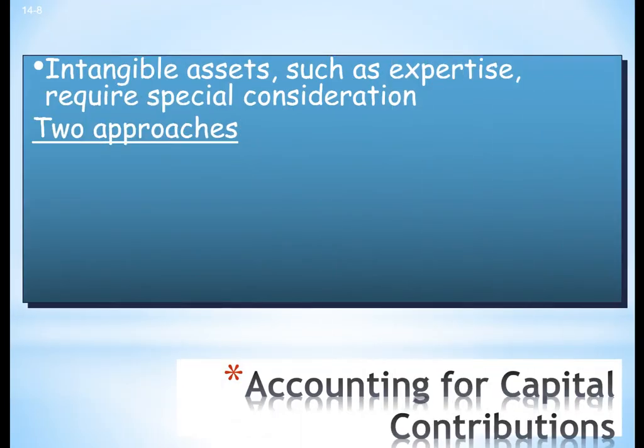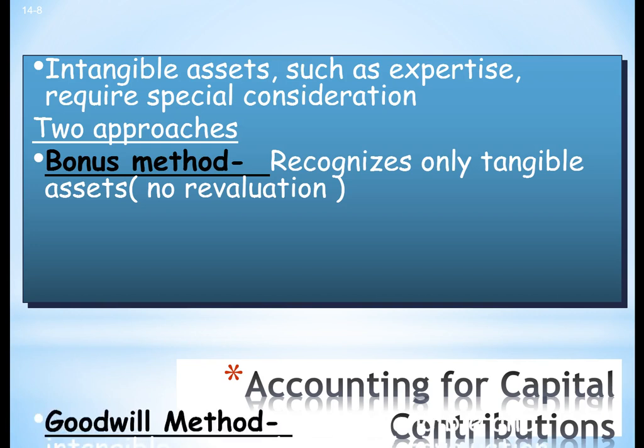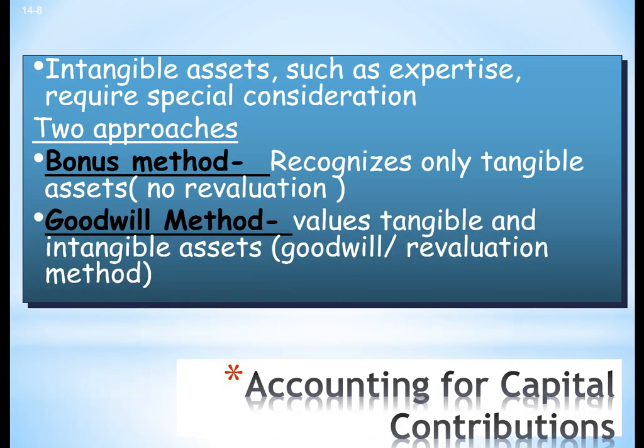Intangible assets such as expertise require special consideration. The bonus method recognizes only tangible assets — there is no revaluation, meaning no creation of goodwill. The goodwill method values both tangible and intangible assets, and involves goodwill and revaluation, also known as the revaluation method.